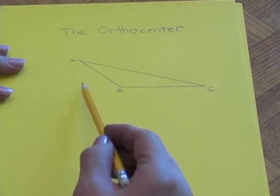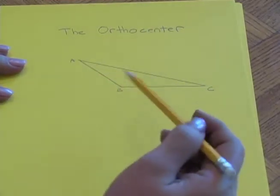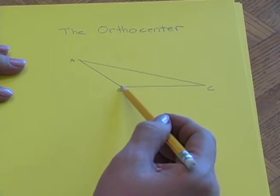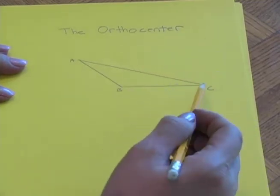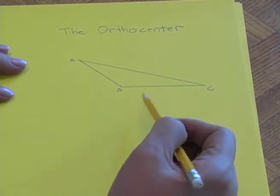The altitude from A to the line that contains BC, the altitude from B to AC, and the altitude from C to the line that contains AB.